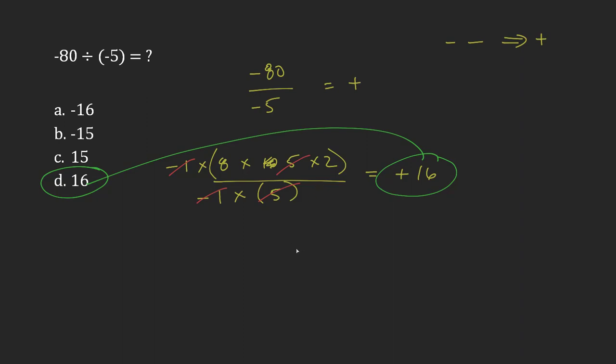Negative 1 multiplied by 80 gives me negative 80. Negative 1 multiplied by 5 gives me negative 5. So you can then cancel out all of these small components that make up each one of the terms. So my answer here is D, 16.